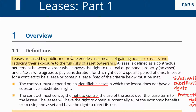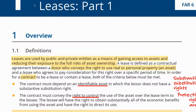As a definition, a lease is a contractual agreement between a lessor — the party owning or controlling the resource initially — who will convey the right to use any sort of property, whether real or personal, to the other party, the lessee, who agrees to pay consideration for this right over a specific period of time.